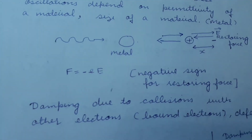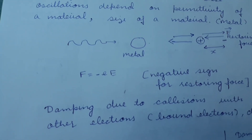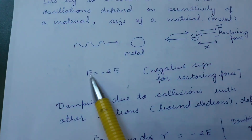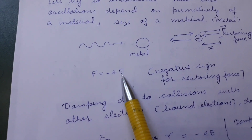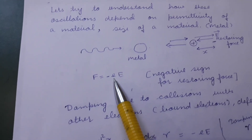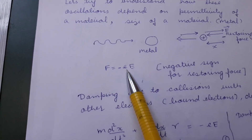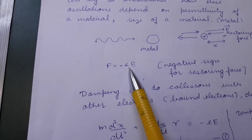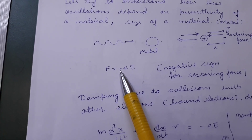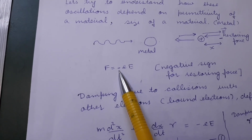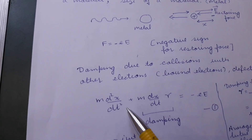Because it is a harmonic oscillator, we can use the equation F = -eE. This is the force applied by the electric field, equal to the restoring force, which acts opposite to the electric field. We use a negative sign here because it is a restoring force.